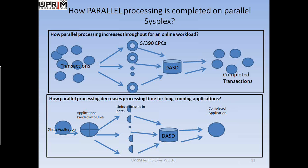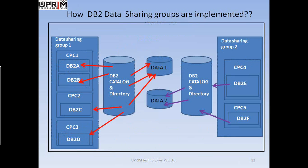As an application programmer, one can take advantage of parallel processing by not combining related functions into a single program. In both diagrams, all CPCs have access to the same data — without that shared access, they would not be able to process the same applications or applications that use the same data. Parallel processing therefore depends largely on the ability of CPCs to share data with each other. On the next screen, we will see how DB2 data is shared across parallel CPCs.